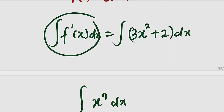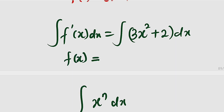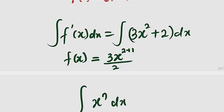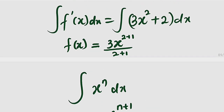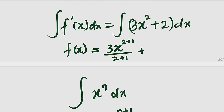So if you integrate the left-hand side, f prime of x becomes f of x. This is equal to — we are going to integrate each term separately. Starting with 3x squared: we have 3x to the power of 2 plus 1 divided by 2 plus 1. Then plus — naturally this 2 has an x to the power of 0 attached, so we have 2x to the power of 0 plus 1, divided by 0 plus 1, plus the constant of integration.